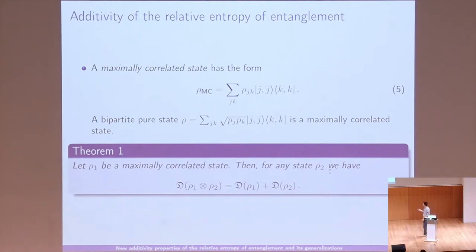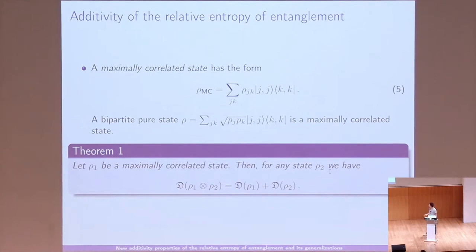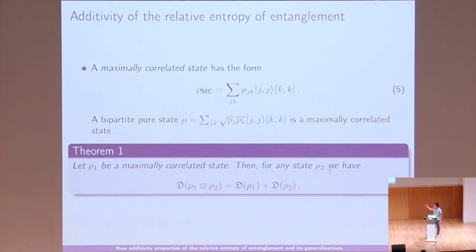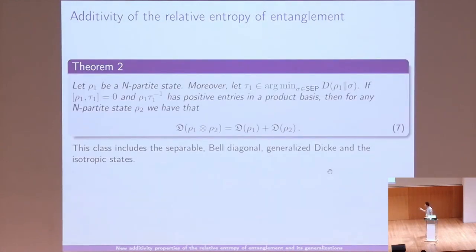I highlight that we have no assumption on the state ρ₂. This is the main point of our result. Usually, if you assume ρ₂ is pure or if you can bound the dimension, you can prove things more easily and often get closed forms. But if you don't constrain the second system, the problem becomes much harder. This unrestricted result is what we will use later.